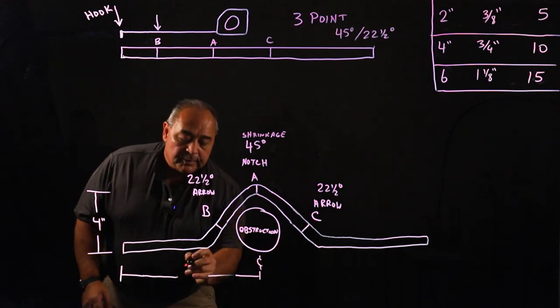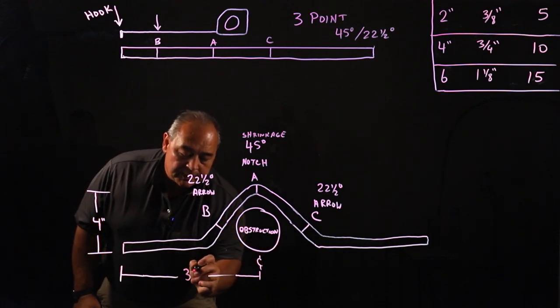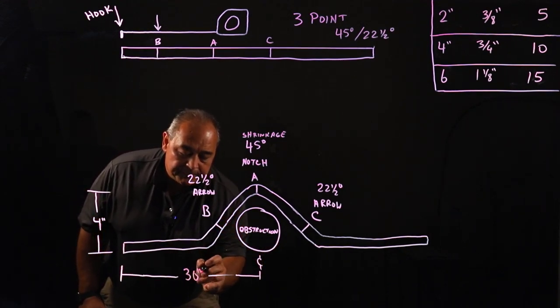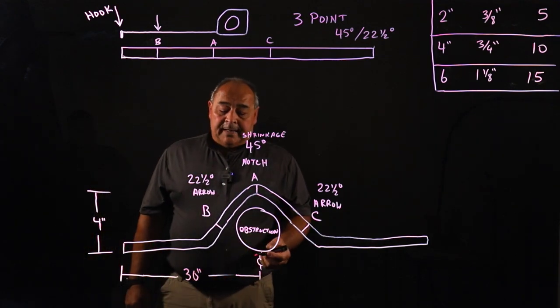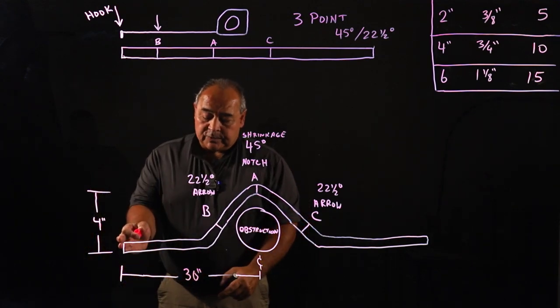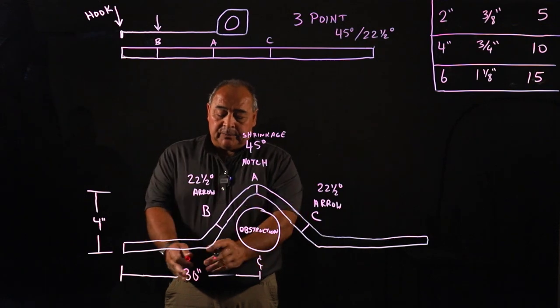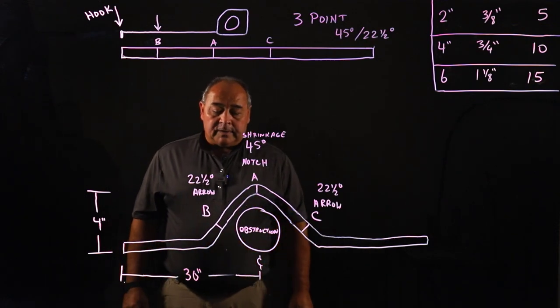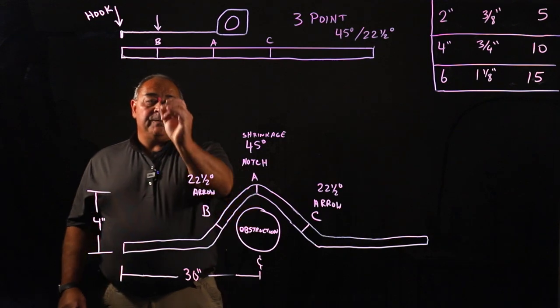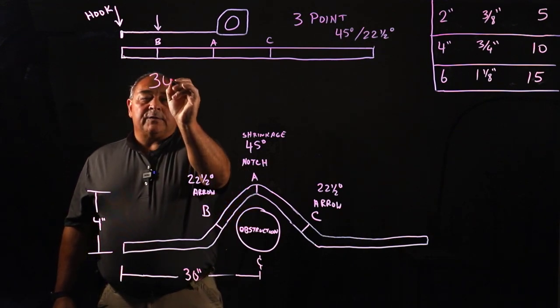Now, if our measurement, let's say, is 30 inches from where our starting point is to the obstruction, it's a simple math. So if we measure from where we're starting to the center of our obstruction and we come up with 30 inches, our math would look like this. Because we've got a four-inch, so 30 inches.